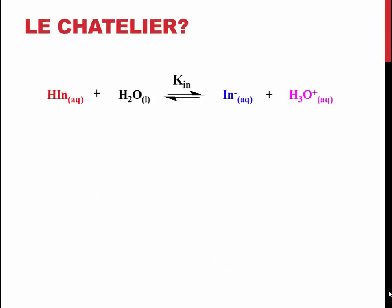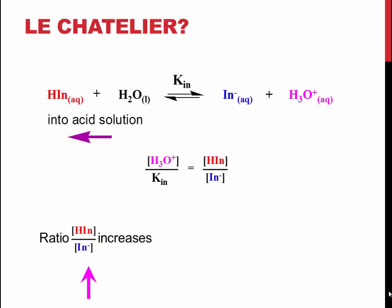Because the indicator relies on an equilibrium reaction, it is subject to Le Chatelier's principle. As the pH of a solution is increased, it shifts towards the products to form more hydronium. This also increases the concentration of the conjugate base and decreases the ratio of the conjugate acid to the conjugate base. If the ratio becomes low enough, it will cause a color change.